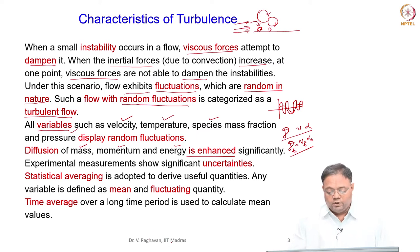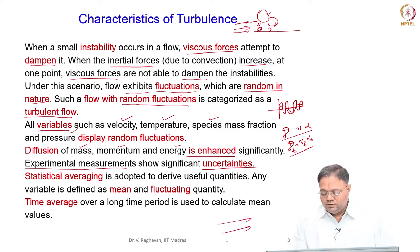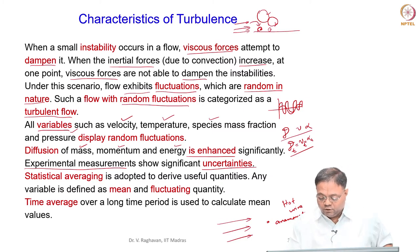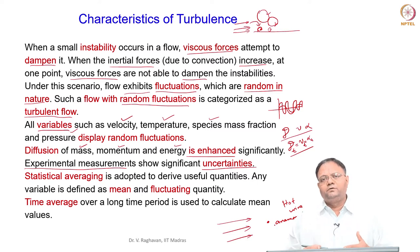Another characteristic of turbulent flow is very high uncertainty in measurements. When you place a hot wire anemometer to measure the velocity field as a function of time at a particular location and repeat the measurement, you will not get the same field. There are issues with repeatability and uncertainties will be very high.